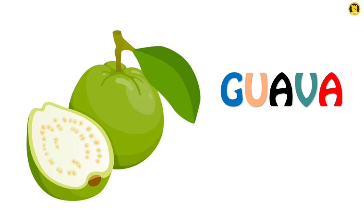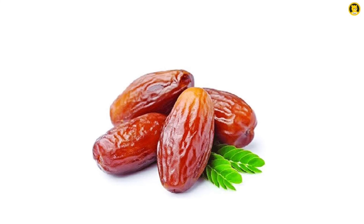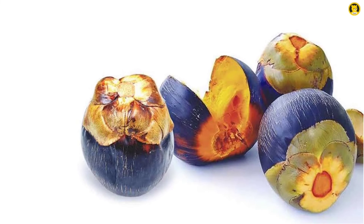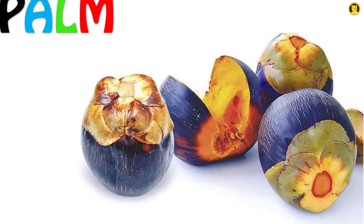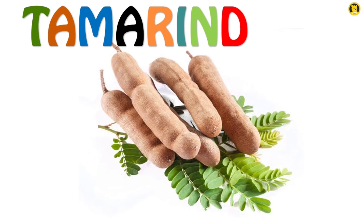What is our next fruit? This is known by everyone — we often have this fruit. What is this called? Guava. What is the next fruit? This is date. Now the next fruit is called plum, and the last fruit is tamarind.